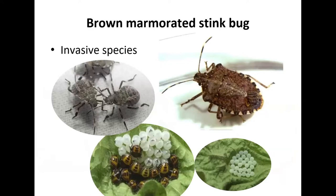Things really changed with the brown marmorated stink bug. It's a 20-year-old emerging issue — when it entered from Asia as an accidental introduction, it took a strong hold particularly in the Appalachian areas of the United States. The population numbers were more than ever seen before, and the damage this stink bug can cause was far beyond what had been seen previously.